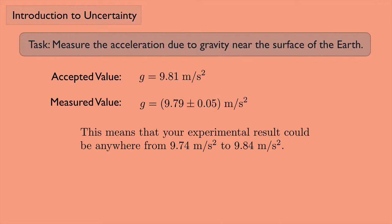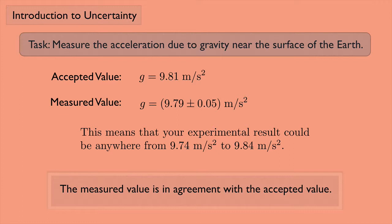In other words, take that 9.79 and subtract 0.05 to get the smaller value and add 0.05 to get the larger value. The measured value is in agreement with the accepted value in this case because 9.81 falls within the range of 9.74 to 9.84.